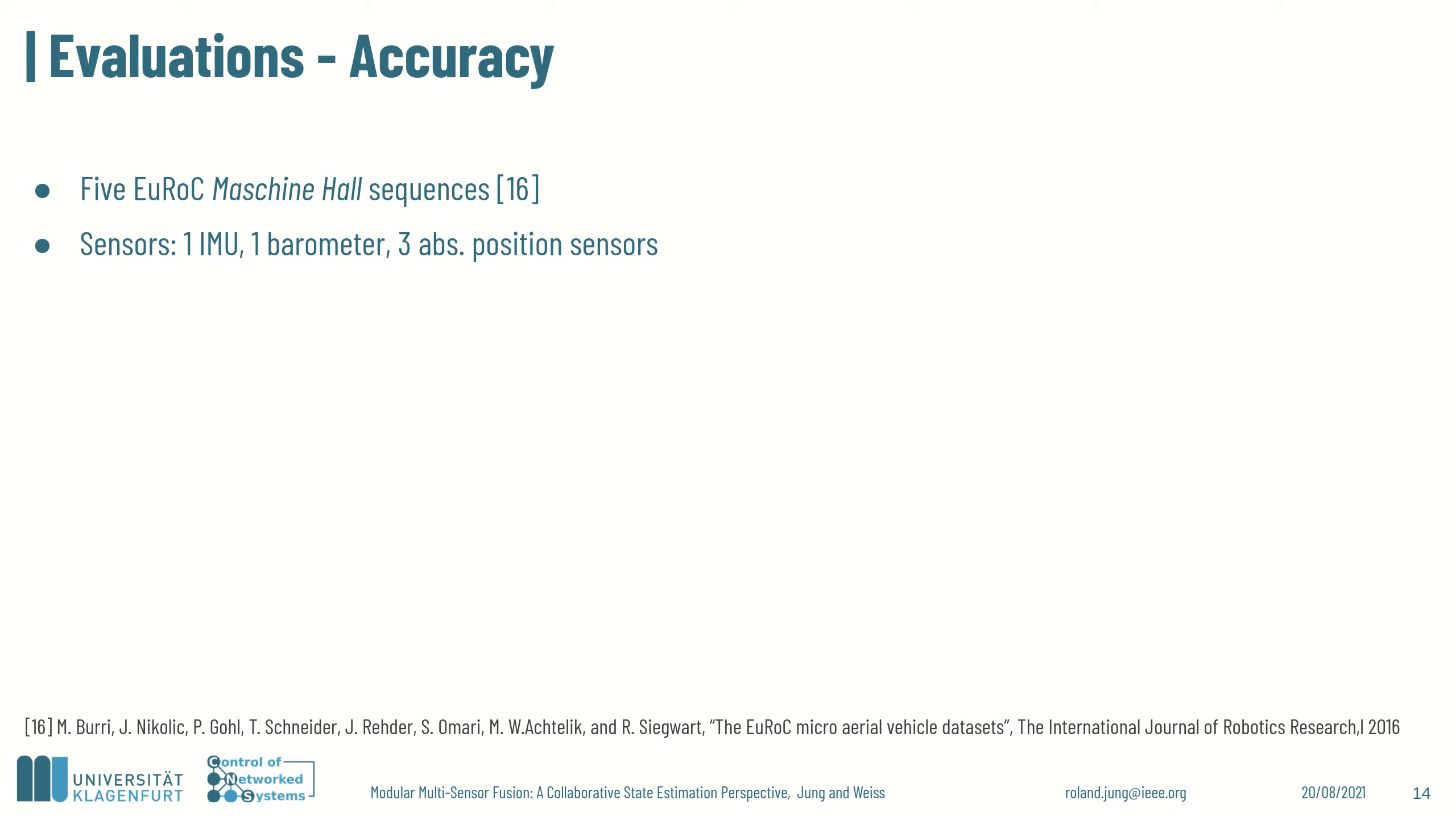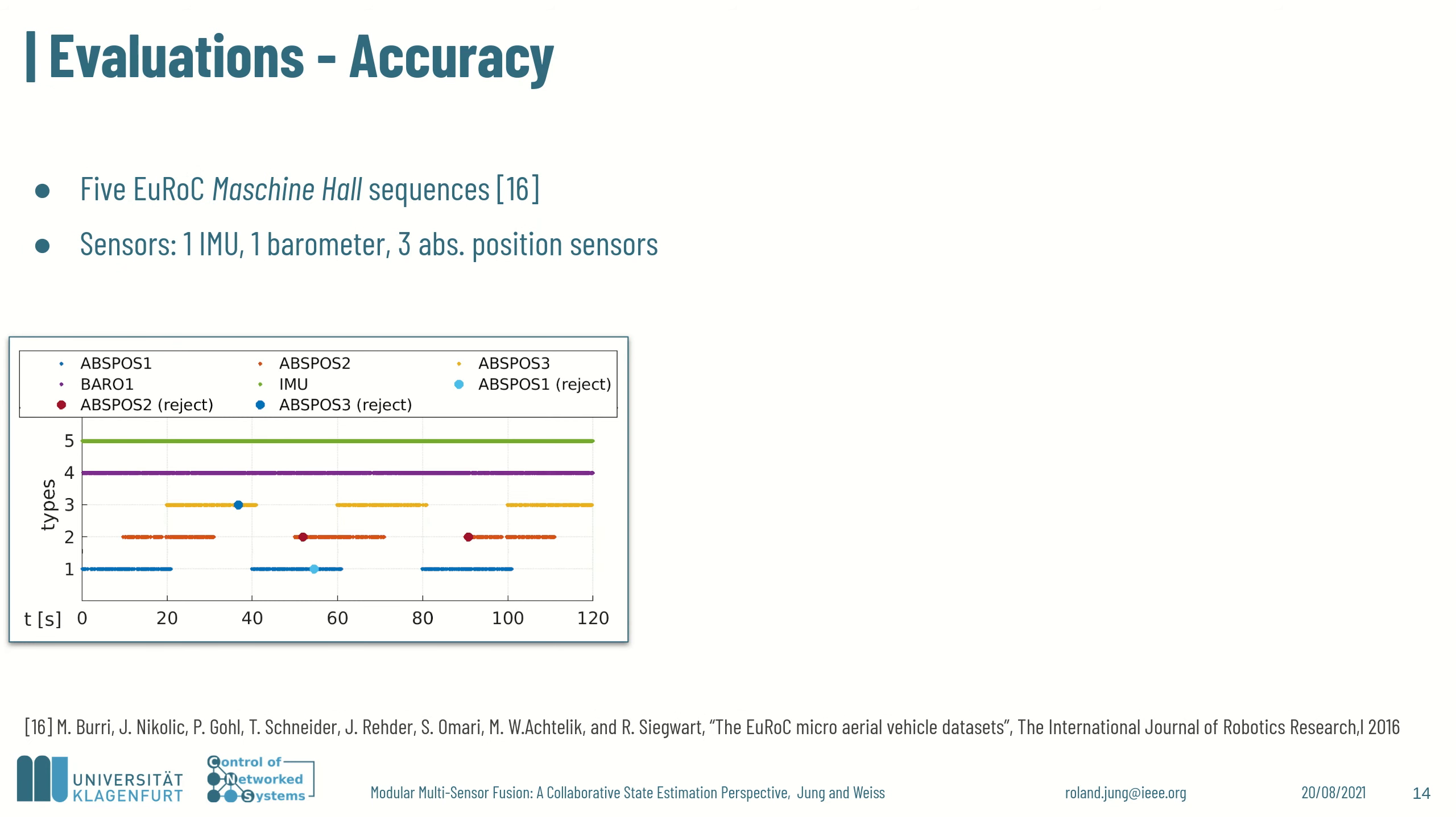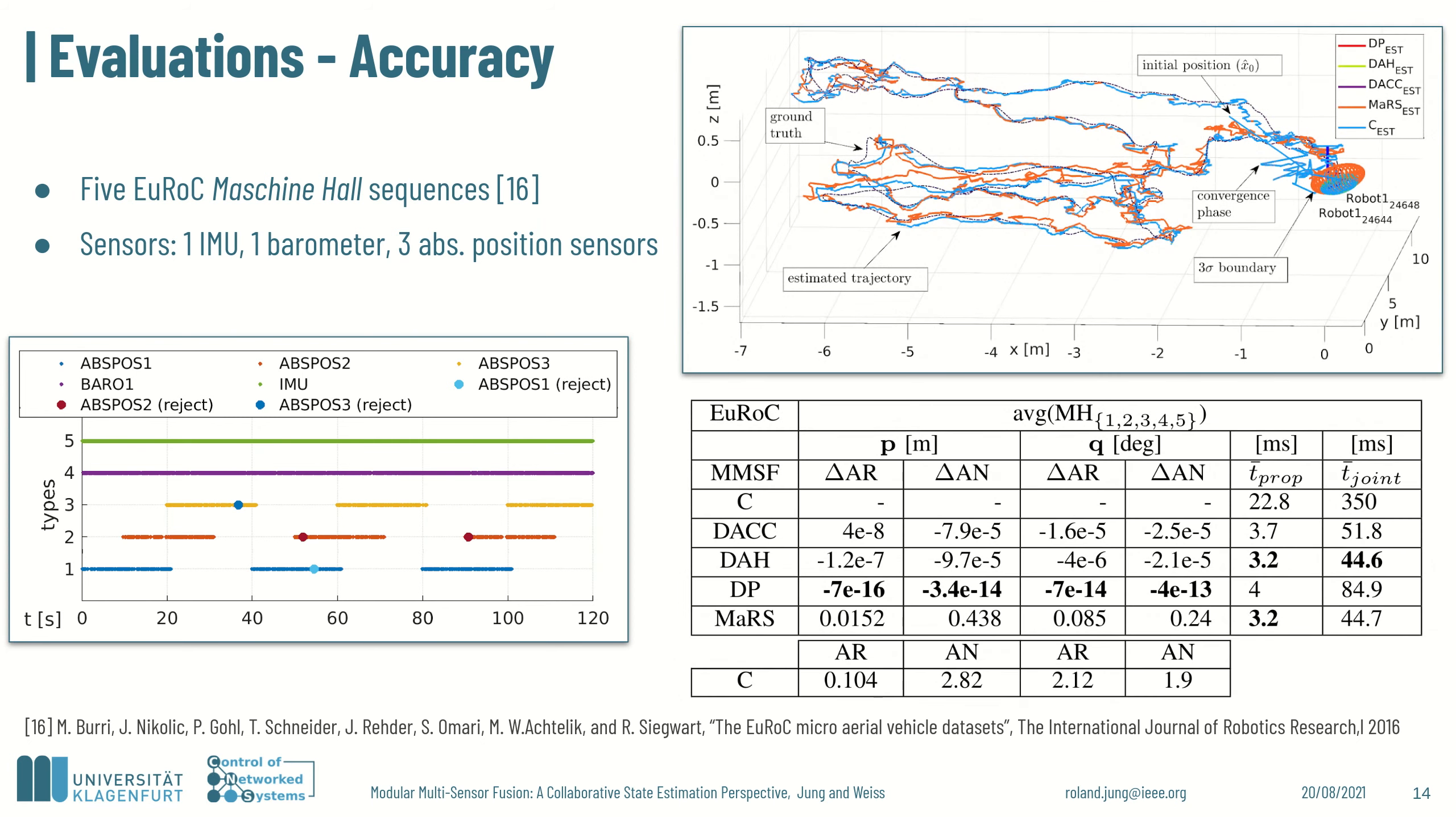To evaluate the estimation performance, we decided to use a barometer and three absolute position sensors to simulate redundancy in case of sensor outages. This figure shows the measurements performed over time and that sensors were switched on and off interleaved, leading to indirect correlations between them. The top figure shows the estimated trajectories using five fusion strategies as well as the true trajectory.